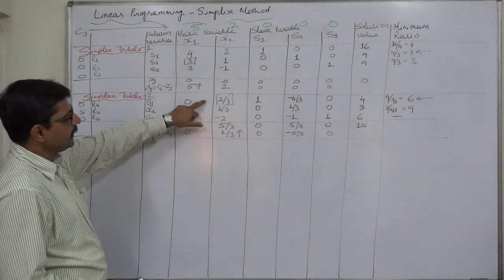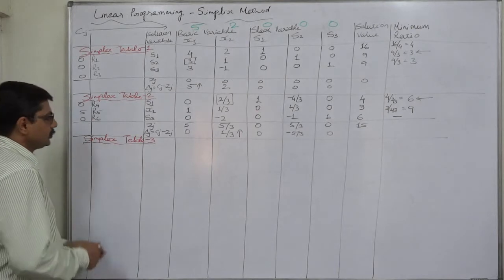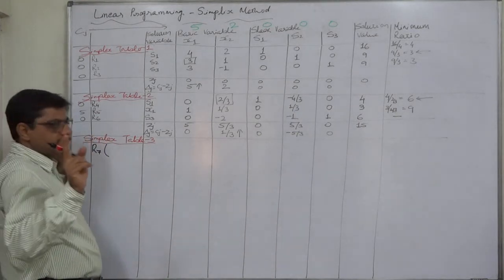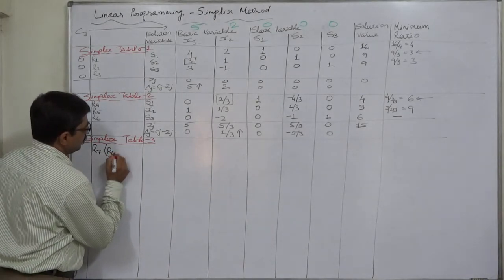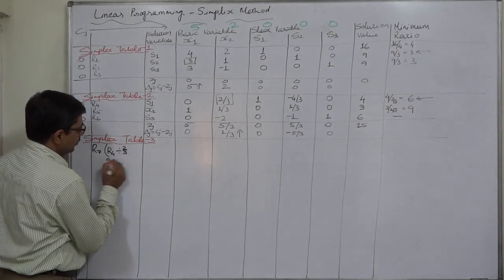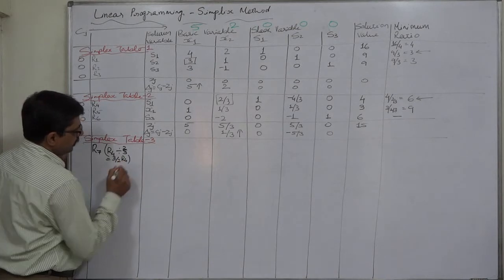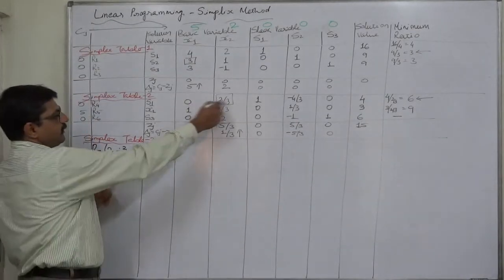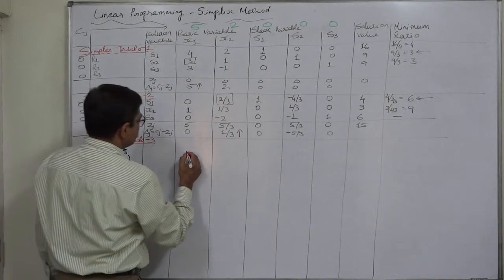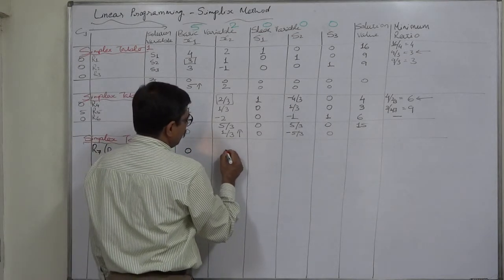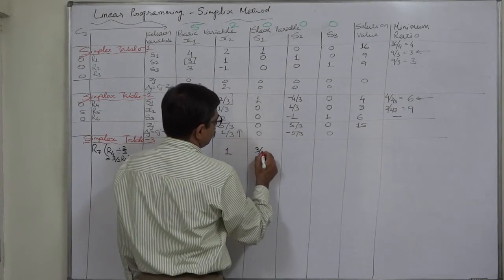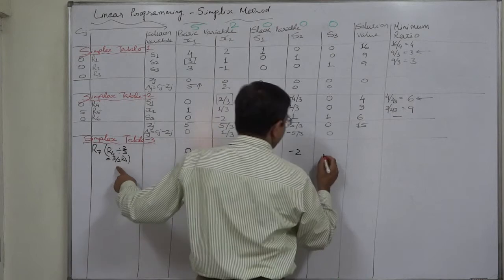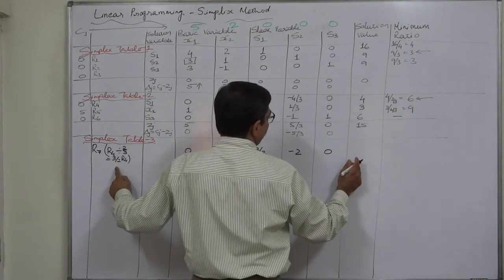Now let us prepare Simplex Table 3. In Table 2, R4 has become the outgoing or key row. So in the next table, let us first prepare R7. For R7 being a replacement row, the formula will be old row R4 divided by the key element 2/3 — so ultimately 3/2 into R4. Division by 2/3 is equivalent to multiplication by 3/2. So: 0 × 3/2 = 0; 2/3 × 3/2 = 1; 1 × 3/2 = 3/2; −4/3 × 3/2 = −2; 0 × 3/2 = 0; 4 × 3/2 = 6.